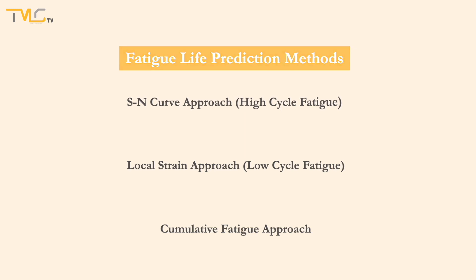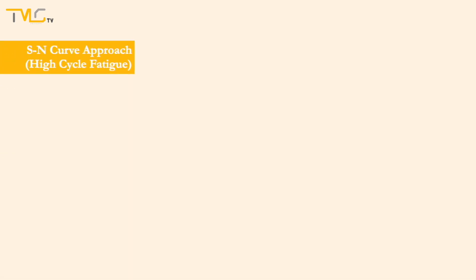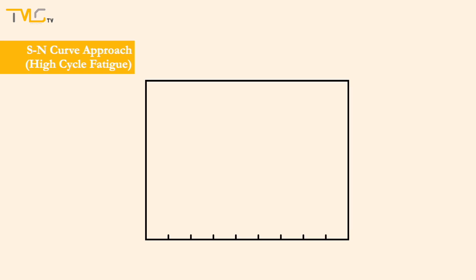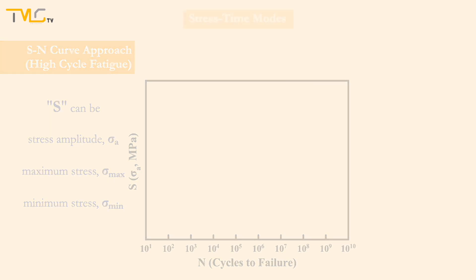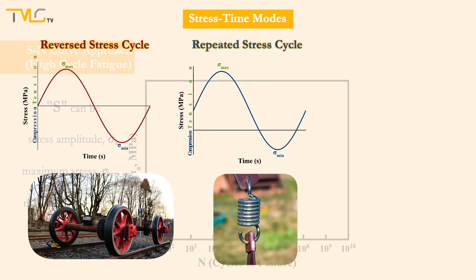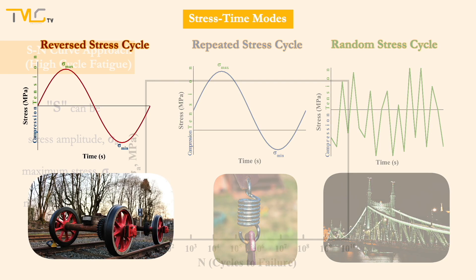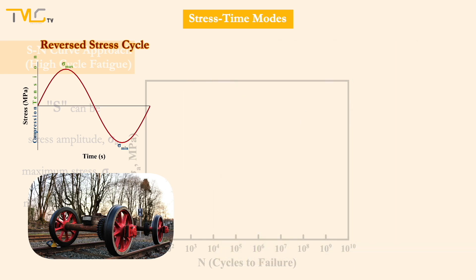The SN curve approach is the simplest method for interpreting the engineering fatigue data to predict the fatigue life of a component. In this curve, the y-axis is the stress applied in MPa, and the x-axis is the number of cycles to failure. The stress value is plotted in linear scale and can be sigma_a, sigma_max, or sigma_min, while N represents the cycles to failure and is expressed in logarithmic scale. It should also be noted that the majority of fatigue tests are performed in completely reversed rotating bending tests, where the mean stress is zero.